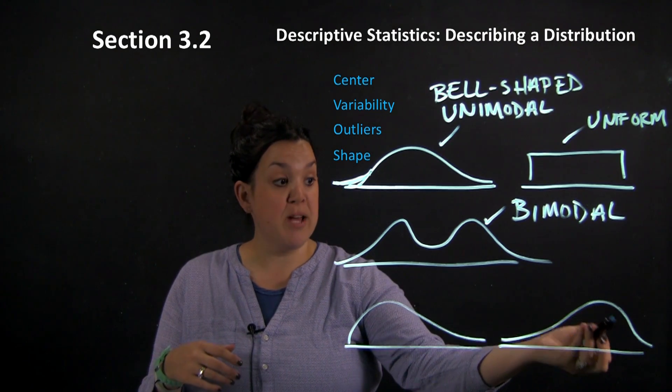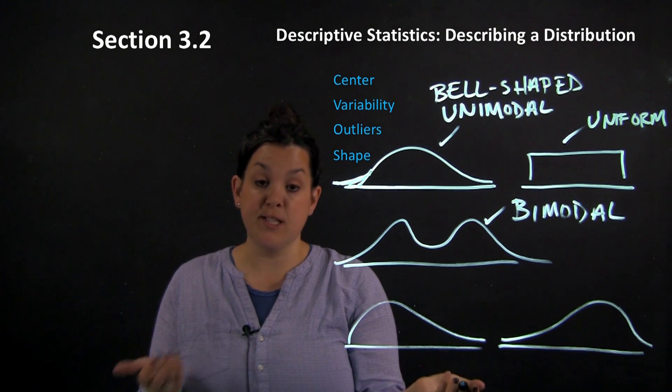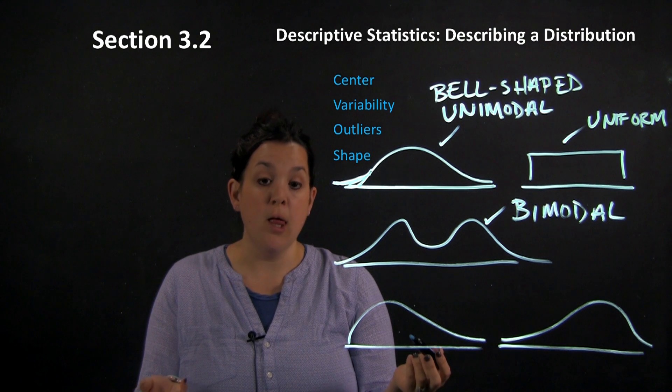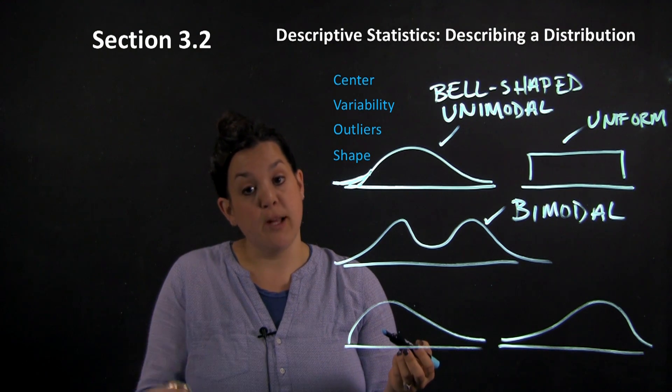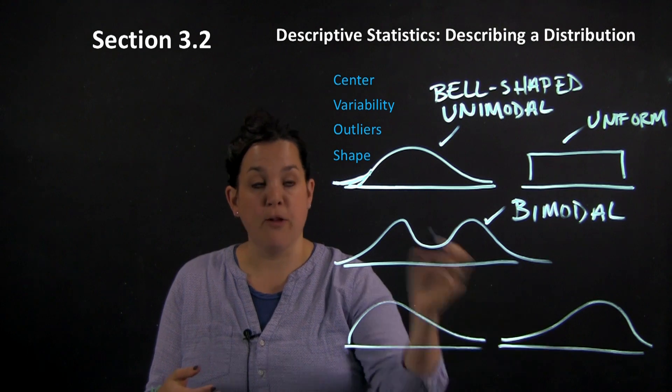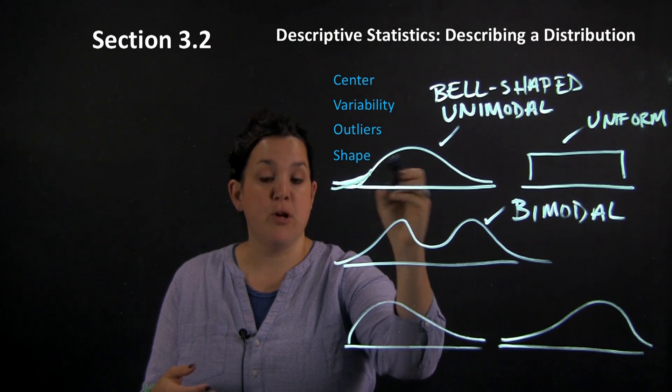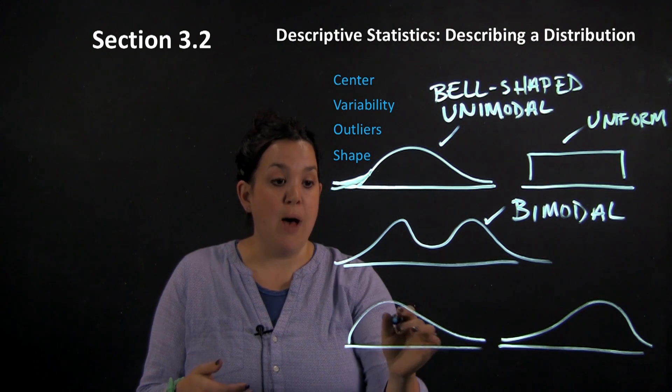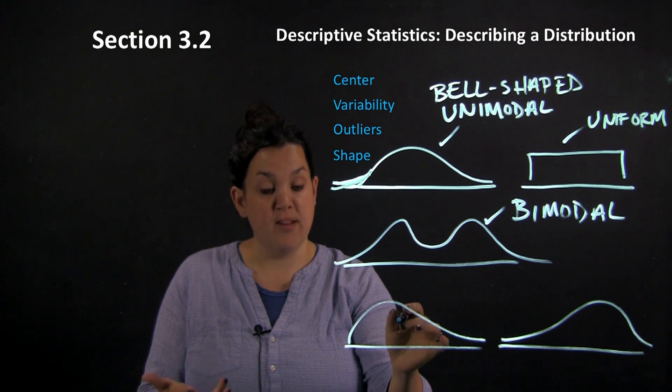Now these down here, because there's only one peak, you can see that that would be unimodal as well. However, if you describe something as unimodal, it doesn't deal with symmetry. So you can see that these do not look the same as the graph up here that's symmetric. So I would have to describe the symmetry of this.